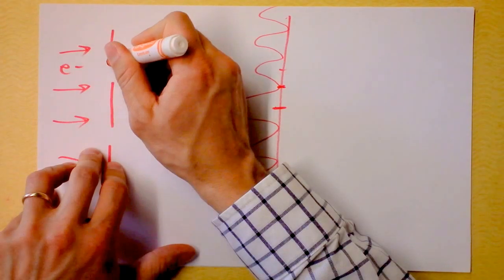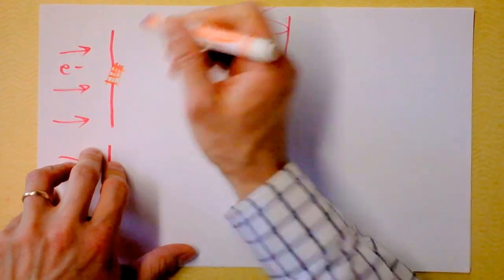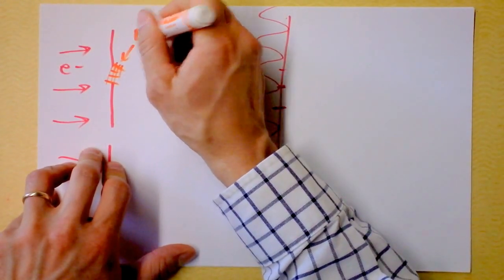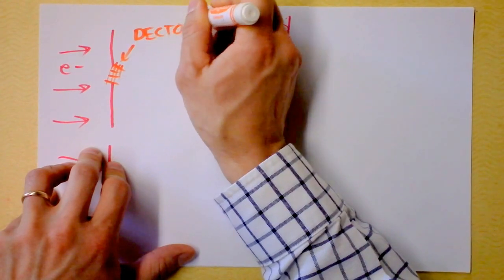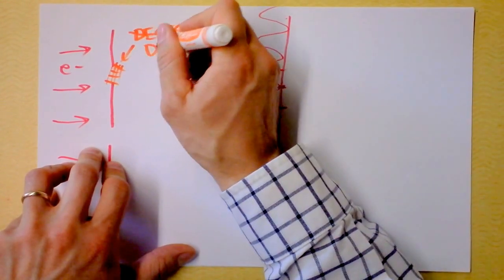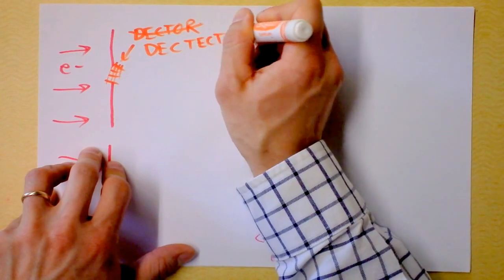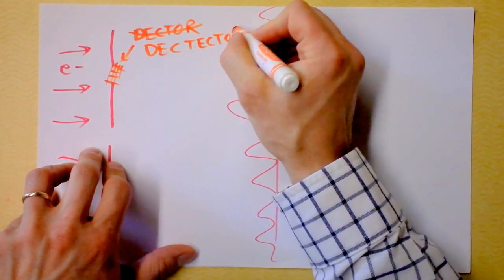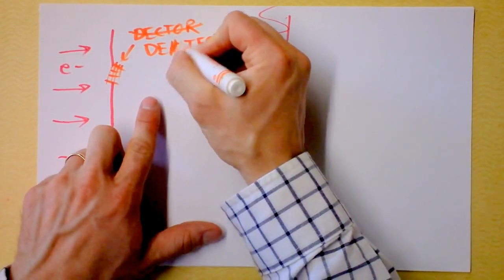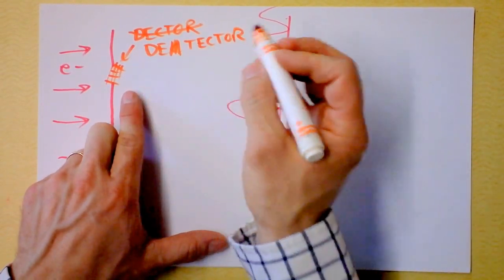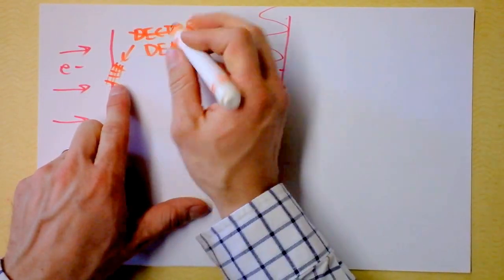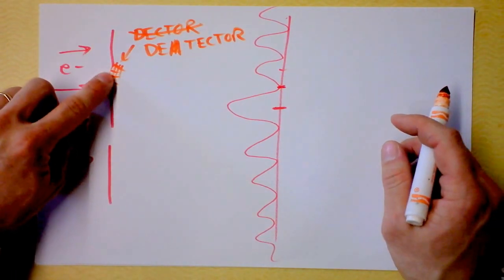I'm going to put a little detector here. And my detector, I don't know what it's going to be technically, but it's going to be a detector. My detector will say whether or not the electron has gone through this slit.